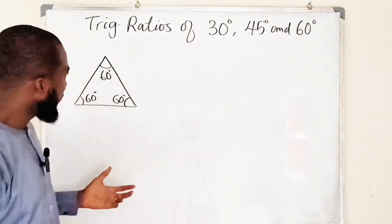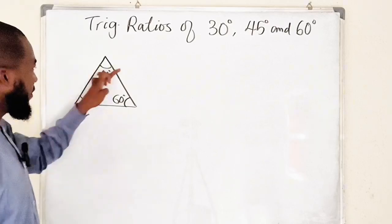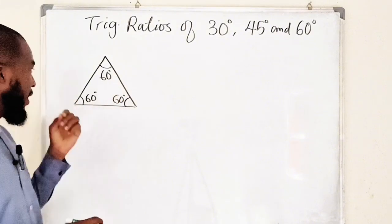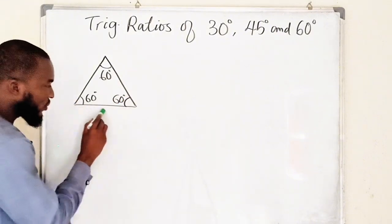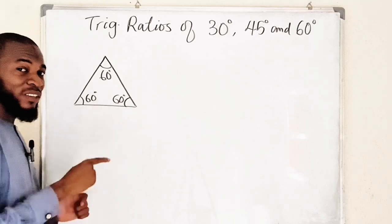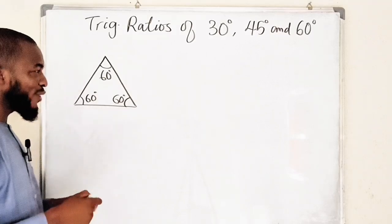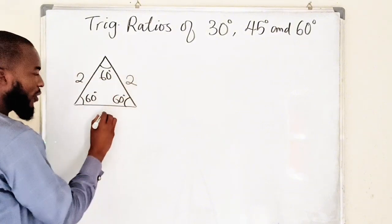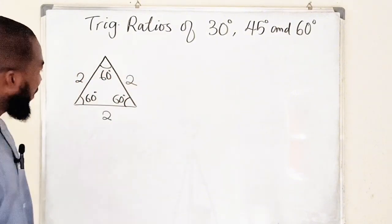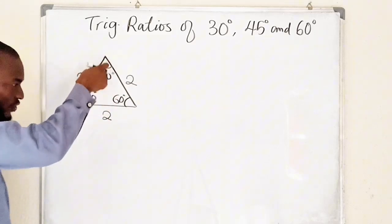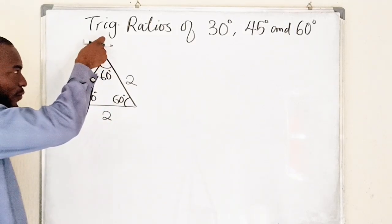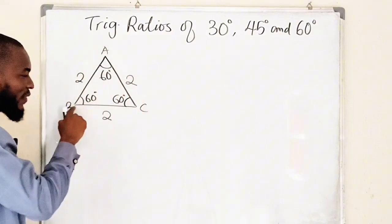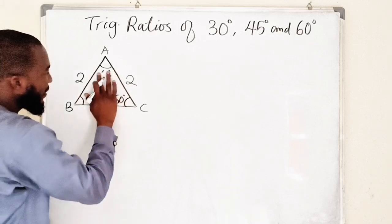The side lengths — it doesn't matter, you can use a variable like x — they must all be the same. I'm going to partition one of the line segments, dividing it into two, so I need to use an even number. Let me use two. So if this is two units, this must be two units, likewise this. I would like to draw a perpendicular line — let me call the vertices A, B, and C — from A down to the line BC.